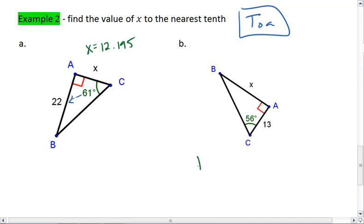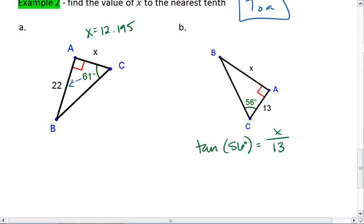We know the tan of 56 degrees is going to be the opposite, that's x, over the adjacent leg, that's our 13. You can type tan of 56 into your calculator. It should be about 1.48, or you can keep it just as tan of 56 if you want to.